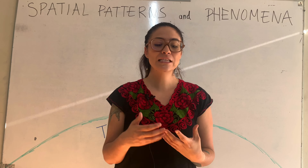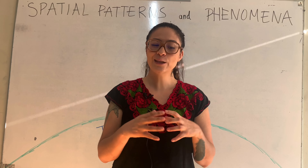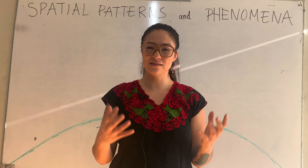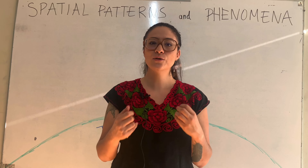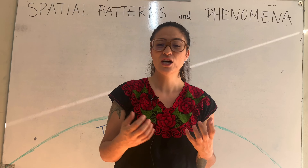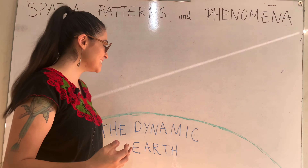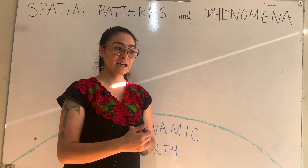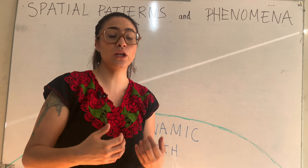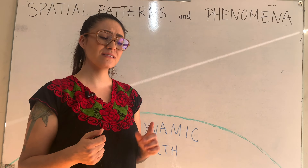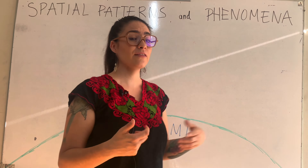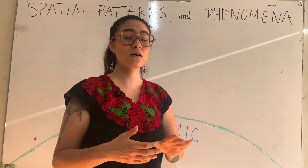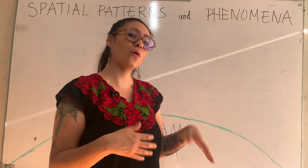We are going to get into this topic with examples. In order to understand the concept of patterns and phenomena, we need to think that everything on the planet is a process. We have a really dynamic planet that is changing all the time, and these changes are the basis of the landscape that we know. Not all processes are the same — some are relatively fast and some are relatively slow and continuous.